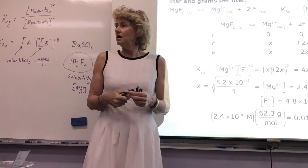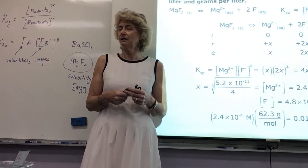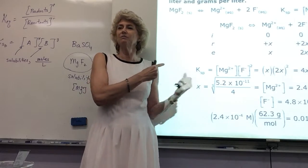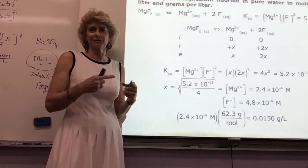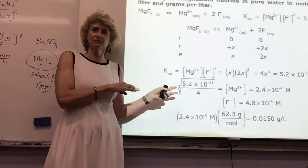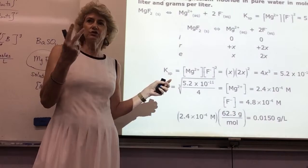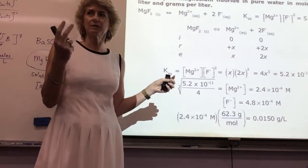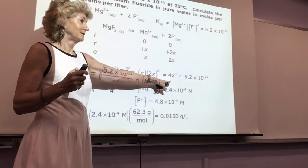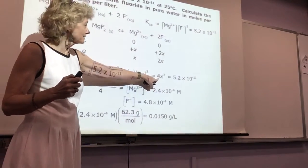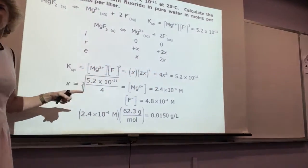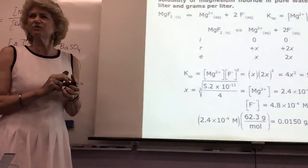If it's two ions, Ksp = X². If it's three ions, Ksp = 4X³, and it gets more difficult beyond that but the AP probably wouldn't go there. For something like Bi₂S₃ that dissociates into five ions, we're not really going to do an ICE table beyond three ions on the AP.